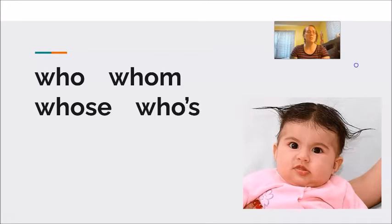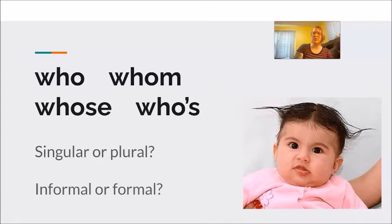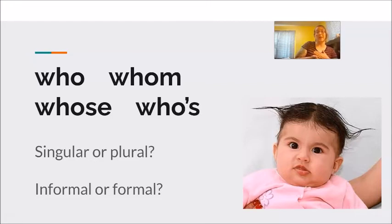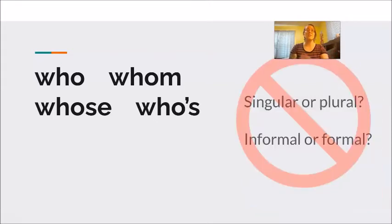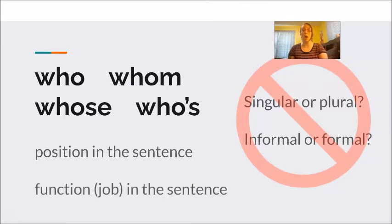Many times students will ask me: is this a singular word or plural word? Is this informal? Is this formal? For example, I say who to my friend, but I say whom about my boss? And it's none of these things. This is not singular or plural. This is not formal or informal. Today when we talk about who and whom, we are talking about the position of the word in the sentence — the job, the function of the word in the sentence.